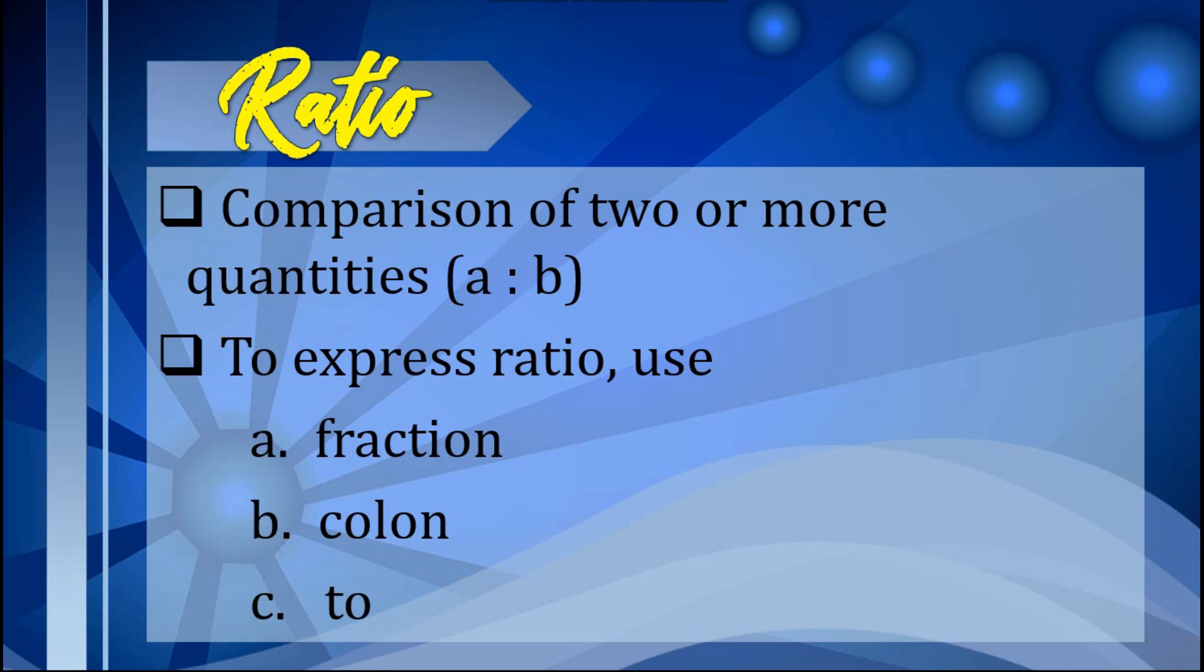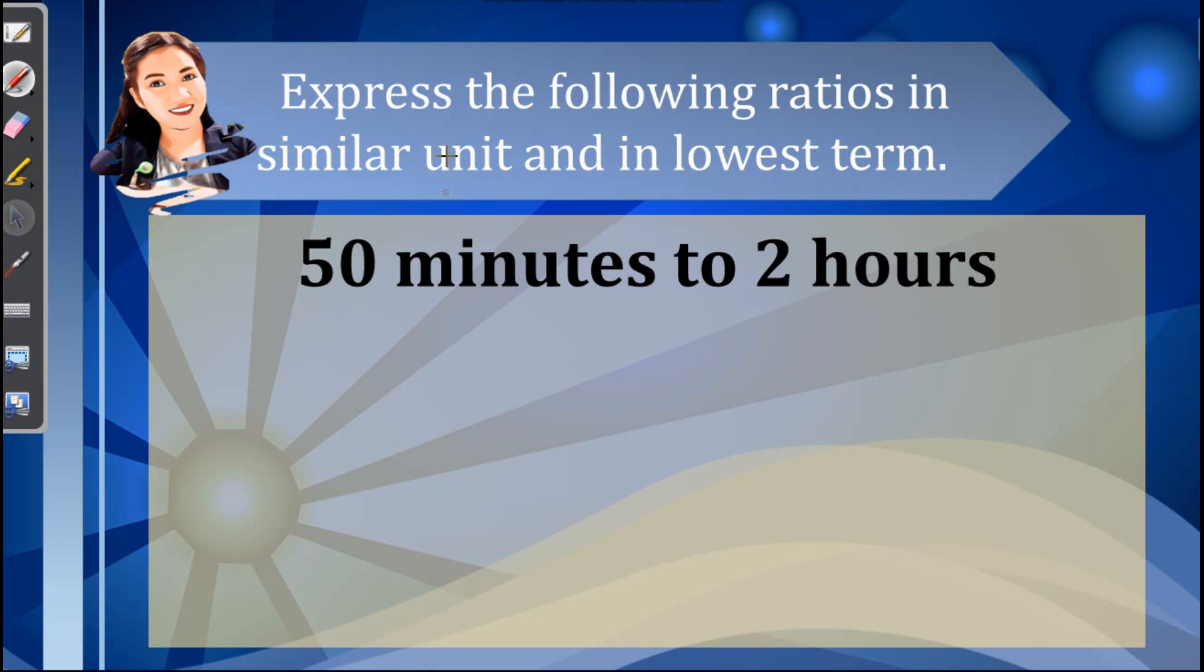Let us now have an example. Express the following ratios in similar unit and in lowest term. First given we have 50 minutes to 2 hours. Since the 50 minutes is less than an hour and we would like to avoid fraction in our ratio, let us convert the hours to minutes instead.